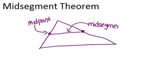You can also make mid-segments that would connect this midpoint with the third midpoint over here, and this midpoint with the third midpoint. So there would be three mid-segments for this triangle.